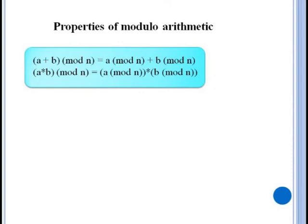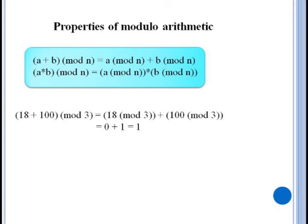Two nice properties of modulo arithmetic are that (a + b) mod n equals (a mod n) + (b mod n) and (a * b) mod n equals (a mod n) * (b mod n). This can simplify algebraic operations considerably. For instance rather than adding 18 and 100 and then dividing by three we can simplify them first and then add. Three divides evenly into 18 so it has a remainder of zero. Three divides into a hundred with a remainder of one. So 18 plus 100 mod three is equal to zero plus one mod three which is just equal to one.